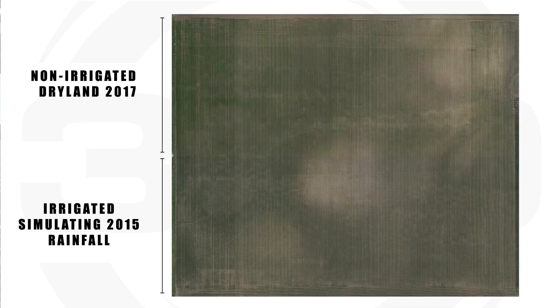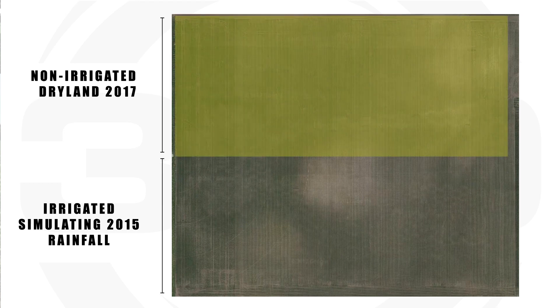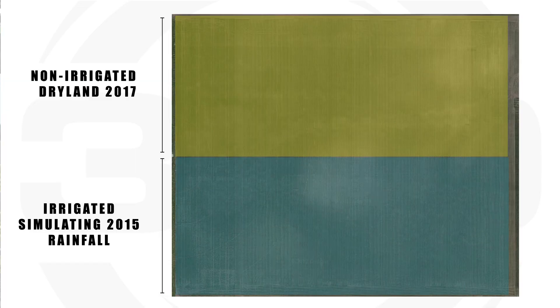We had a north half that was just regular rainfall, and here in the south half we duplicated the 2015 rain pattern, which for us was the wettest of all time. It was an extreme amount of rain — there was a time in July 2015 when we had over nine inches.